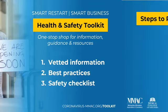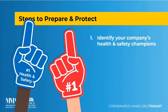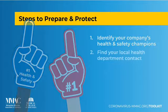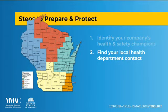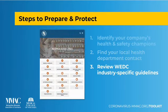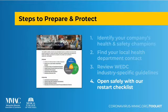The steps listed here are how you can start the process. First, identify someone in your organization who will take the lead on the health and safety procedures suggested in the toolkit. Next, identify your local health department contact — Dr. Cassidy and Ann will be speaking to this point later in the webinar. Our third step is to review WEDC's industry-specific guidelines for your business. We use WEDC's best practice guidelines as a jumping off point for the checklist, but you should take the time to review their guidance on your industry specifically. Lastly, use our comprehensive checklist to implement health and safety best practices.